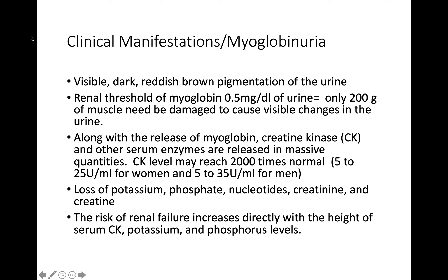Clinical manifestations include visible dark reddish-brown pigmentation of the urine. The renal threshold of myoglobin is 0.5 mg, and only 200 grams of muscle damage is needed to cause visible urine changes. Along with myoglobin, creatine kinase (CK) and other serum enzymes are released in massive quantities. Creatine kinase — not to be confused with creatinine — is an enzyme whose level may reach 2,000 times normal. Loss of potassium, phosphate, nucleotides, creatinine, and creatine also occurs; renal failure risk increases with the height of serum CK, potassium, and phosphorus levels.